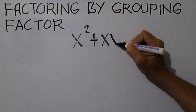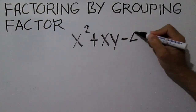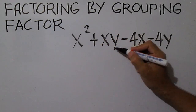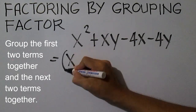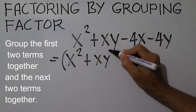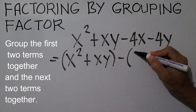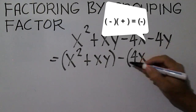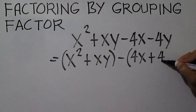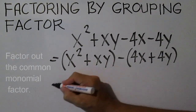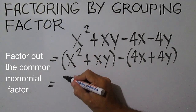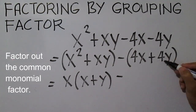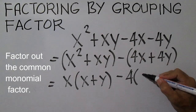Factor X squared plus XY minus 4X minus 4Y. Group the first two terms together and the next two terms together: the quantity X squared plus XY, minus the quantity 4X plus 4Y. Note the change in operation from subtraction to addition. Next, factor out the common monomial. The common monomial is X, and the other factor is X plus Y. The common monomial is 4, and the other factor is X plus Y.